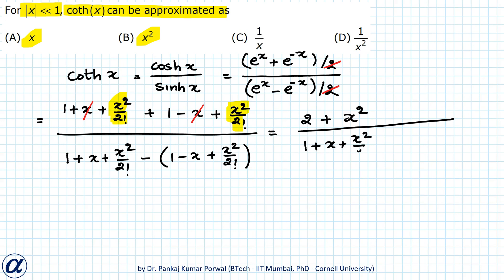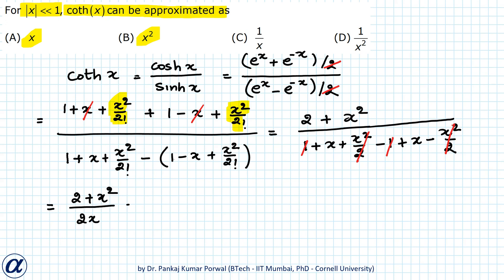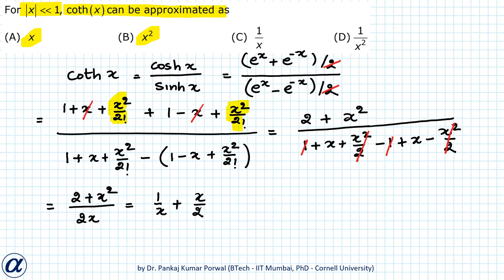In the denominator: 1 plus x plus x squared by 2 minus 1 plus x minus x squared by 2 — the 1s cancel, the x squared by 2 terms cancel, leaving 2x. So we get 2 plus x squared divided by 2x, which equals 1 upon x plus x by 2. Because x is much much smaller than 1, 1 upon x is much bigger than x by 2, so we can ignore x by 2, giving approximately 1 by x. So answer C is correct.